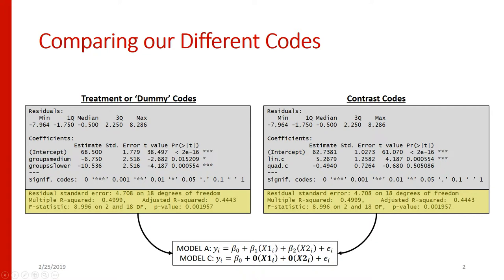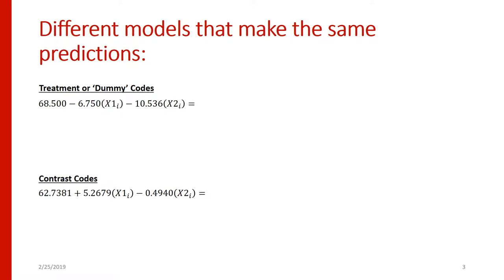The actual coefficients differ between treatment codes and contrast codes, but the estimates you get out of the model will be the same either way. Because those estimates ultimately wind up being the same, the sum of squared errors for model A is the same in both situations. Model C is obviously the same since we're just estimating an intercept for everyone. The model A, model C comparison yields the same result: an F with 2 and 18 degrees of freedom of 8.996, which is statistically significant assuming alpha was set at 0.05.